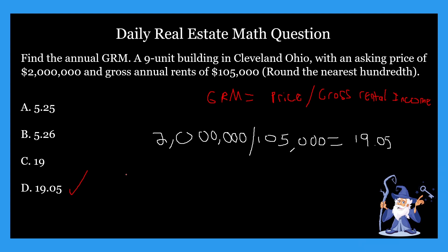For our sake, we're just looking at basic GRM problems, and that's what we did today. The super important formula is GRM equals price divided by gross rental income. We plugged in the numbers and found 19.05 as our correct answer. This stuff is super interesting. For the rest of this week, we are going to go over more GRM problems.